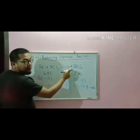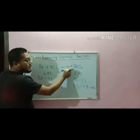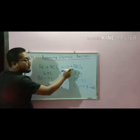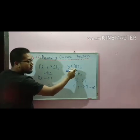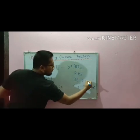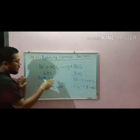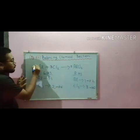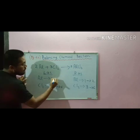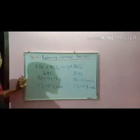But when I have written two on the RHS, that two is also standing for aluminium — making it two. But on the LHS only one is there, so if we write two over here it will become two. Understood?